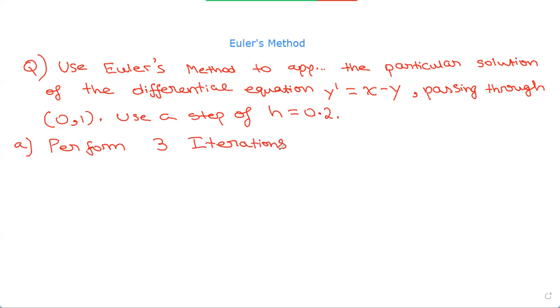So what we have to do is we have to approximate the solution of the differential equation, y prime equals x minus y passing through 0 comma 1. And we have to use a step of h equals 0.2. So what Euler's method is, is we use many tangents to approximate the value. So we form different equations, and we get closer to the value. So we have to approximate the particular solution, right? So we know that 0 comma 1 is our first point.